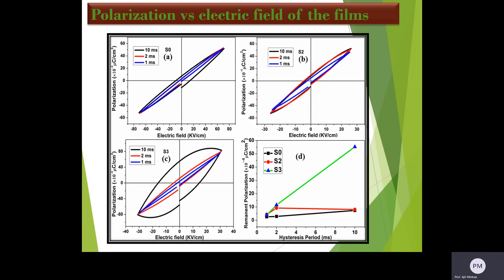The variation of polarization with electric field has been shown for different samples at different hysteresis periods. We observe the periodic electric hysteresis loop for S0, S2, and S3, except S1 and S4. The increment of remnant polarization with polarization with crystallization period for S0, S2, and S3 has been observed.